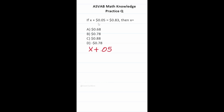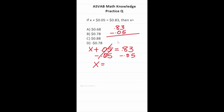This math knowledge practice test question says: if x plus 5 cents equals 83 cents, then x equals what? We're solving an equation with decimals: x + 0.05 = 0.83. Subtracting 5 cents from both sides isolates x. So x = 0.83 minus 0.05. Since 3 minus 5 we can't do, we borrow from the 8 — it becomes 7, and 13 minus 5 is 8. Seven minus zero is 7. So x = 78 cents, which is answer choice B. Note: the ASVAB is computer adaptive, so early questions can be this simple.